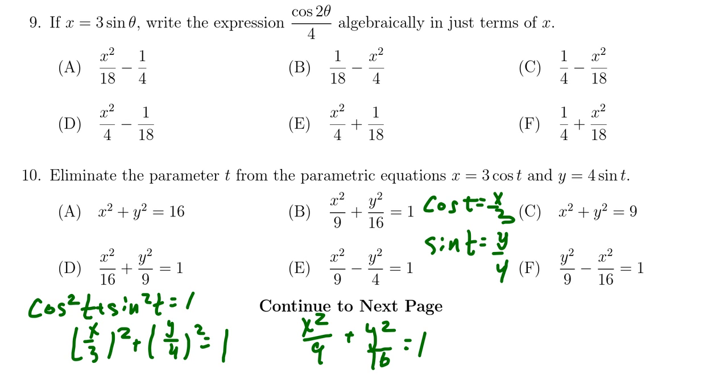And so this does give us, of course, the equation of the ellipse, which is centered at the origin, which has a horizontal radius of 3, a vertical radius of 4. But again...